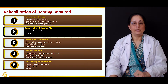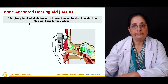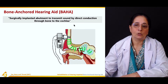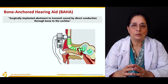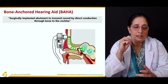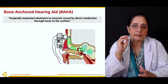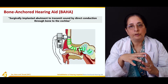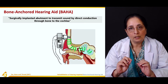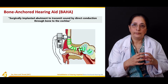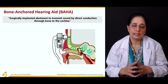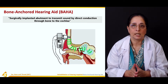The bone anchored hearing aid is a surgically implanted abutment to transmit sound by direct conduction through bone to the cochlea. Unlike conventional hearing aids placed behind the ear with a receiver, amplifier, and microphone, this hearing aid is implanted on the bone and transmits sound from the bone directly to the cochlea for hearing.